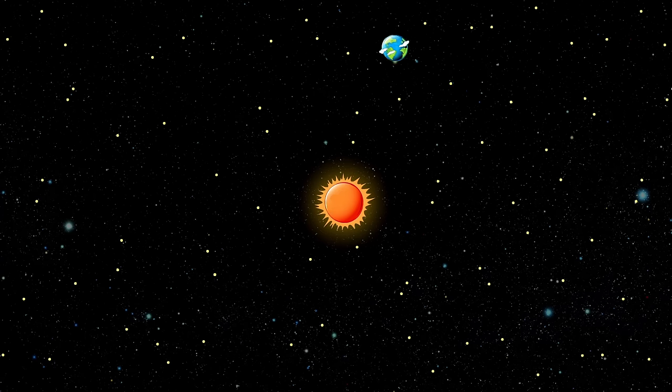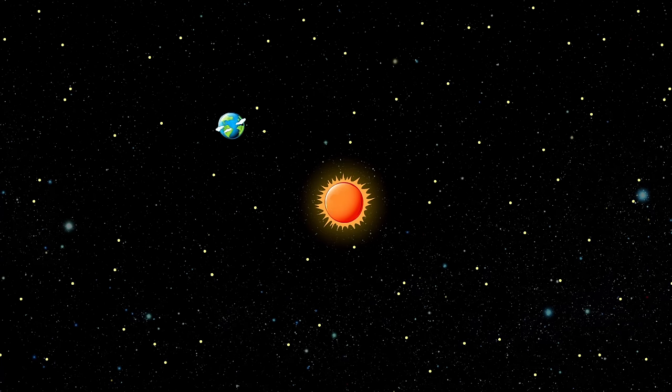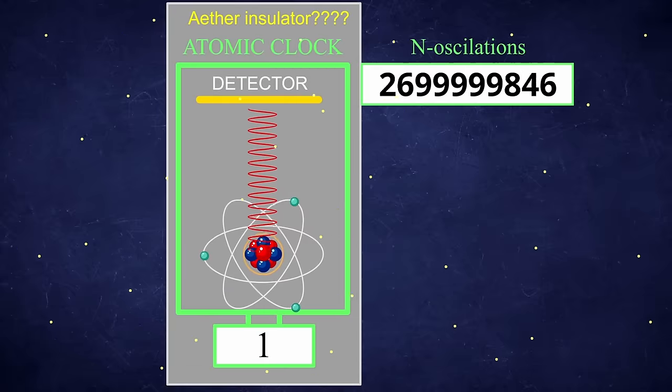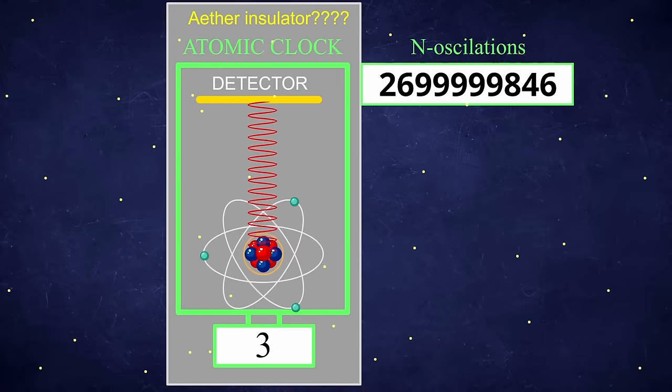But if there was a similar medium for light, it must be such that it doesn't interact with matter. Otherwise, the Earth would slowly spiral down to the sun due to drag, and therefore such a box for atomic clock would not work.